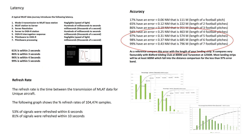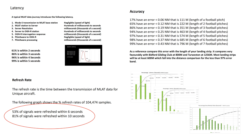Secondly, there is the accuracy. Multilateration gives very good performance with 86% having a positional accuracy within the length of three football pitches, and a full 99% with an accuracy of seven football pitches. Thirdly, the refresh rate shows 81% of signals being refreshed within 10 seconds. This is also good, but we're working on reducing this as low as possible. The near real-time rather than real-time nature of multilateration should always be considered when using the system.